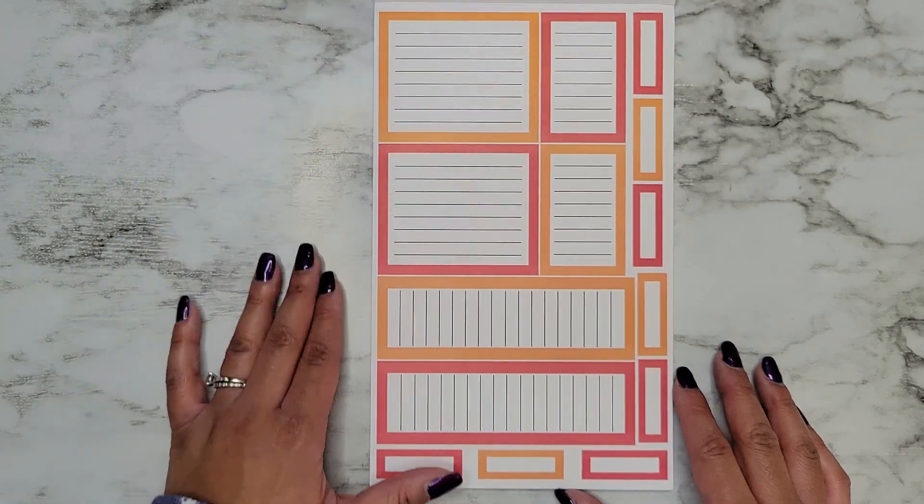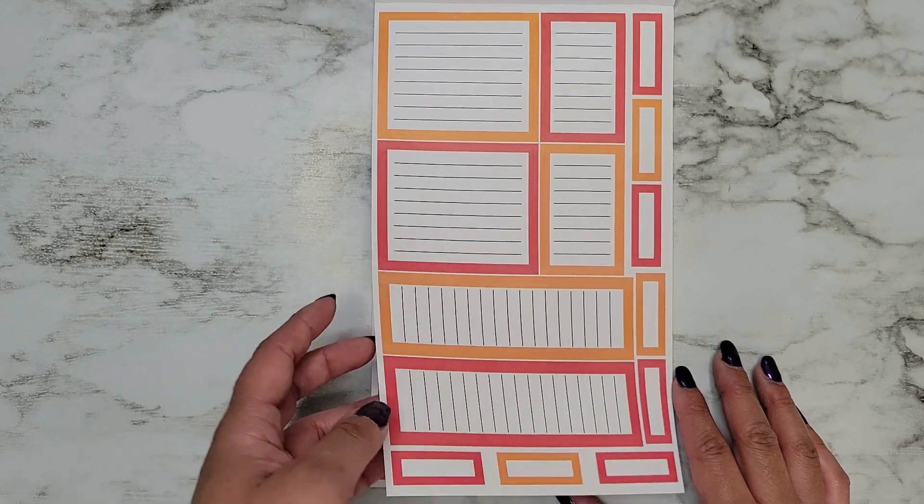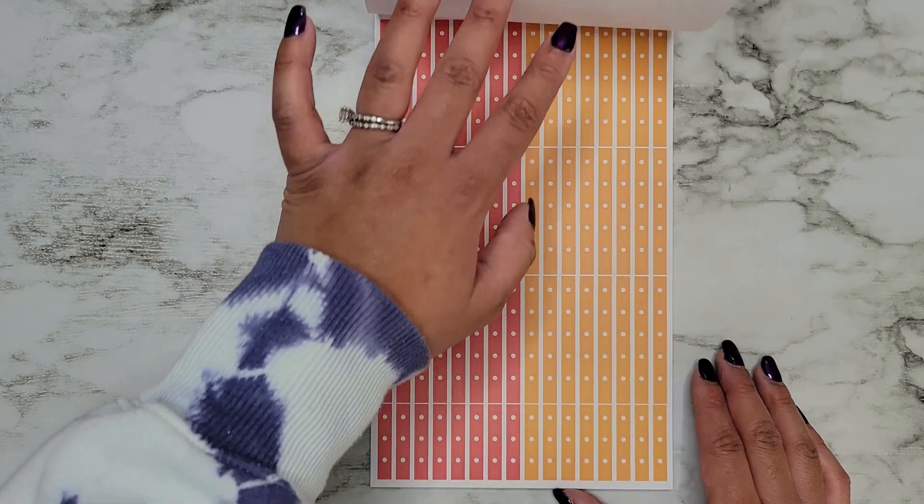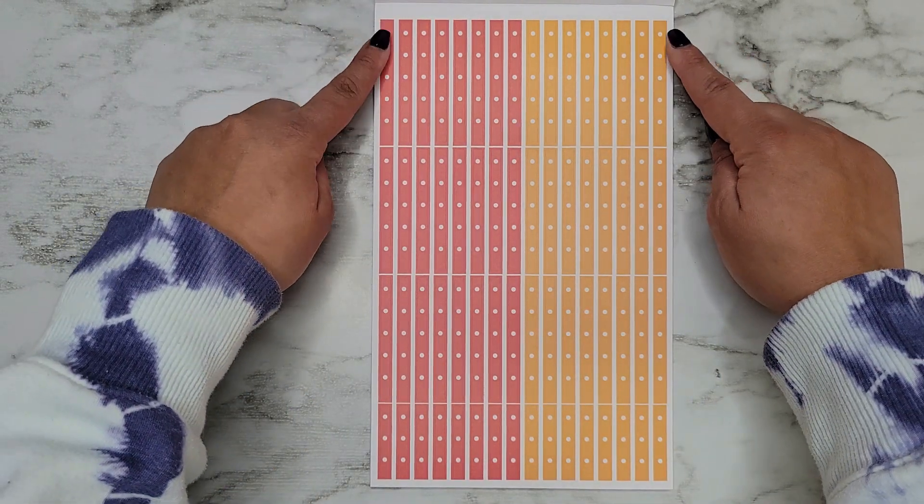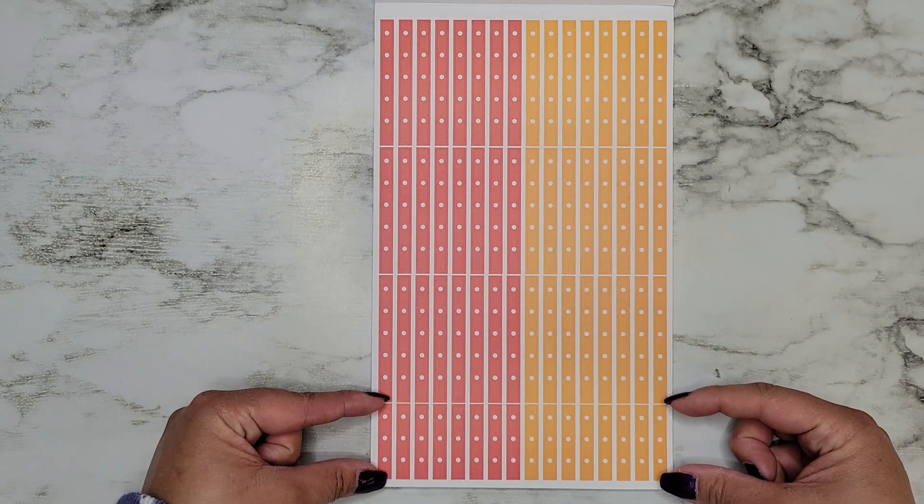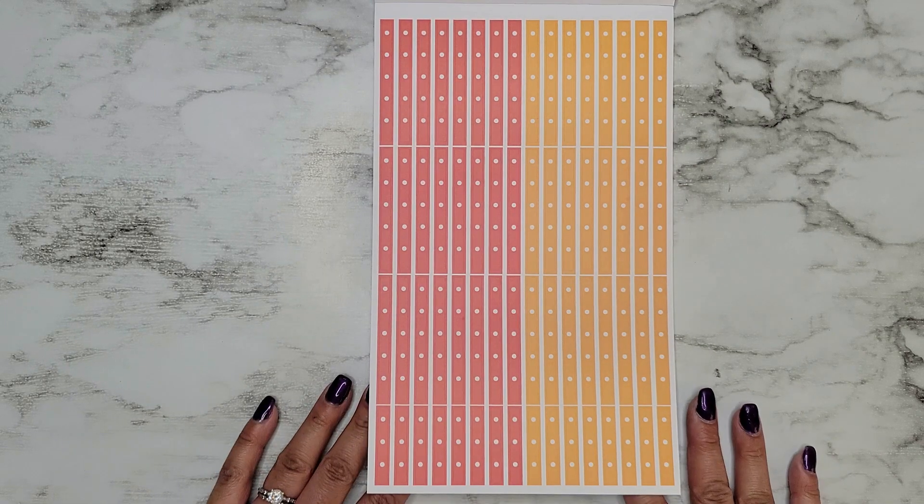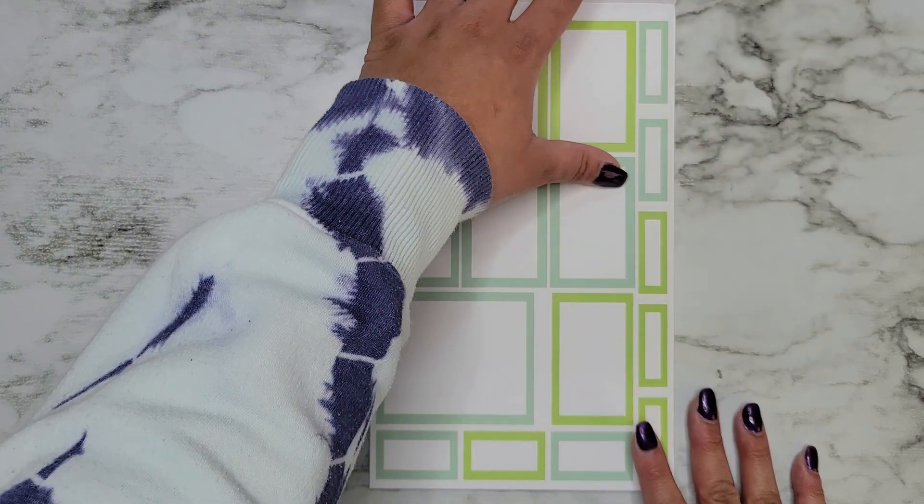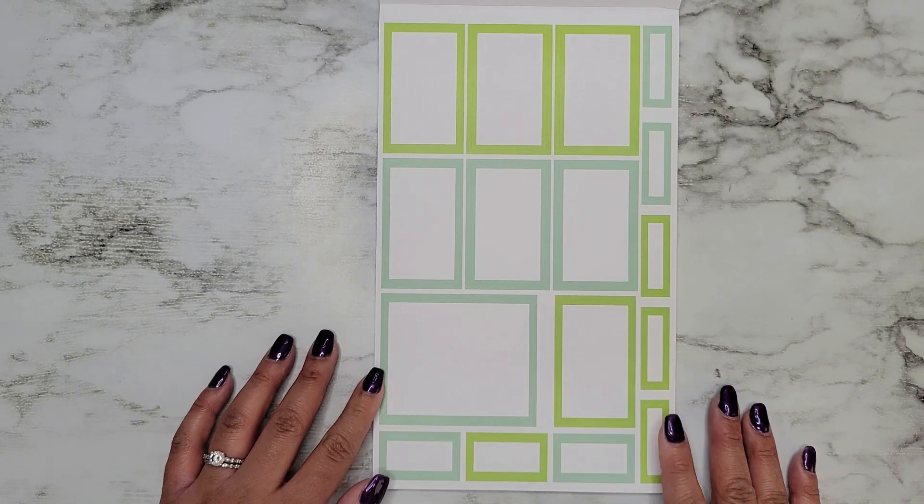You get two of those pages. Again, these are laid out exactly like Autumn and Winter Boxes. Then to finish it off you get matching checklists. You have your long checklist, three rows of those. These ones have six bullet points, and then down at the bottom we have some little mini checklists and they have three points on them.